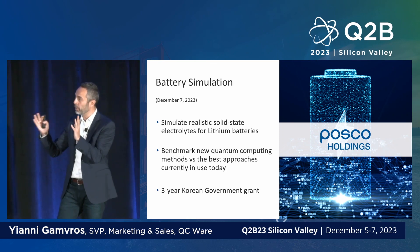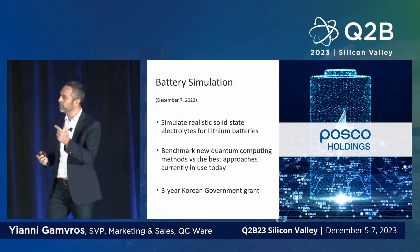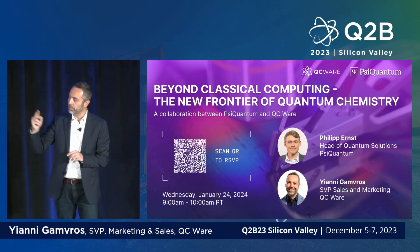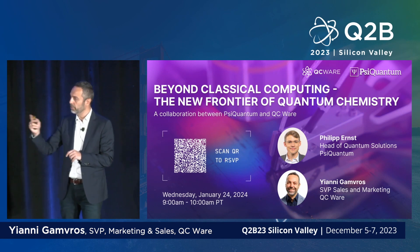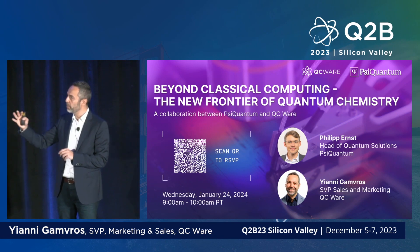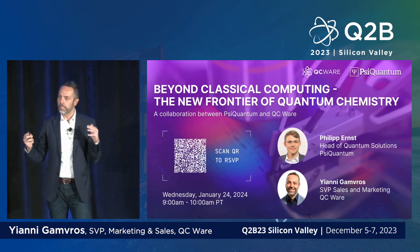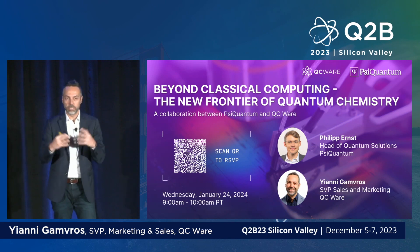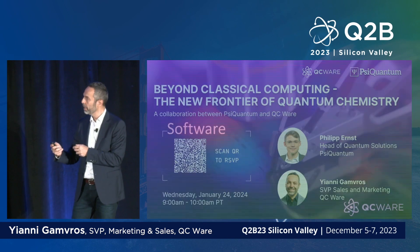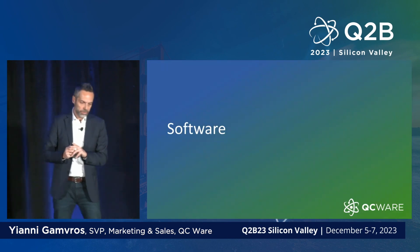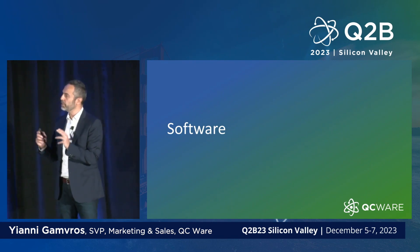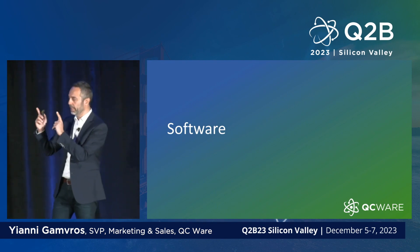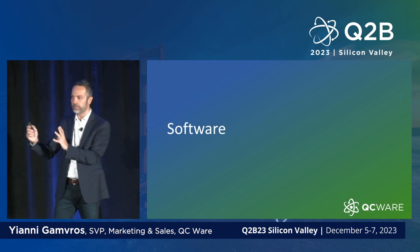That's basically what we've done over the last 12 months. I also want to mention a webinar we're doing together with PsiQuantum in January — on January 24th we'll present a way to collaborate with both of us and discuss chemistry simulation on fault-tolerant architectures. On the software side, let me lay out our vision for getting to quantum advantage, with one set of slides on chemistry simulation and another on machine learning.